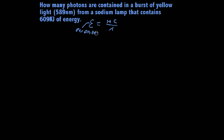Basically what this question is asking us is: if they give us 609 kilojoules of energy, how many photons is that going to contain? This is the formula we're going to use with some dimensional analysis to get to the answer.